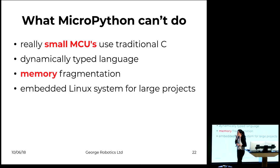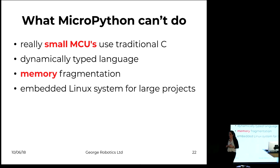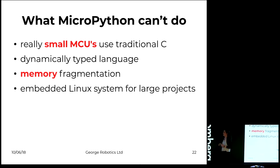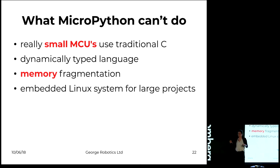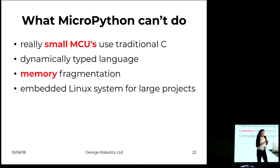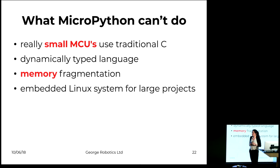Of course, there are things MicroPython is not so good at or cannot do at all. If you have really small microcontrollers, it's best to use traditional C. It's still a dynamically typed language, so you really have to keep your memory in order with garbage collection — if you generate too many objects, you have to keep that in mind. And if you're working on really large projects, you might prefer an embedded Linux system.